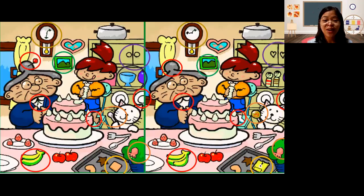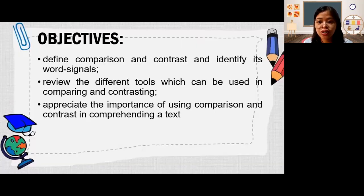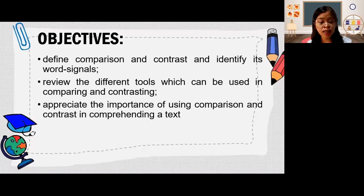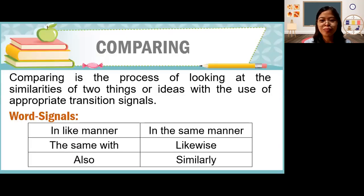So that was our activity. Now, it's important to have this activity because in today's lesson, we are going to define comparison and contrast and identify its word signals. Number two, review different tools which can be used in comparing and contrasting. And lastly, appreciate the importance of using comparison and contrast in comprehending a text and also in comparing your own opinion with what is presented in the text. Comparing is the process of looking at the similarities of two things or ideas with the use of appropriate transition signals. Remember that when we compare, we look at the similarities.